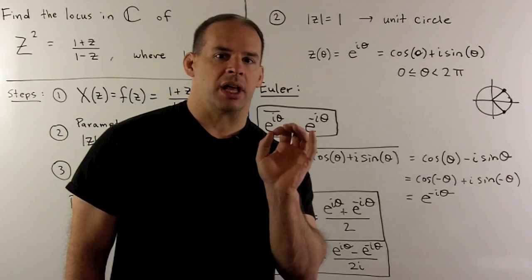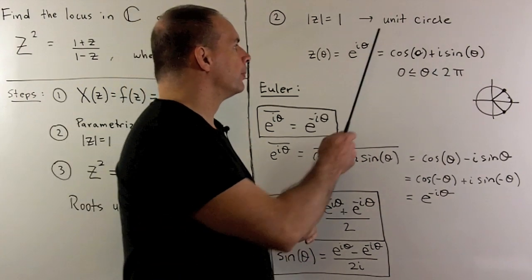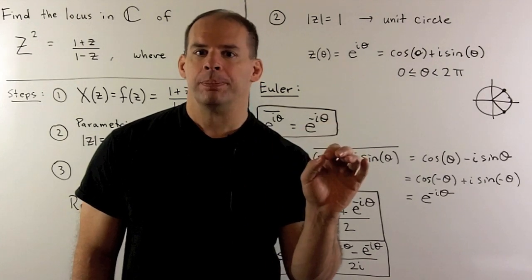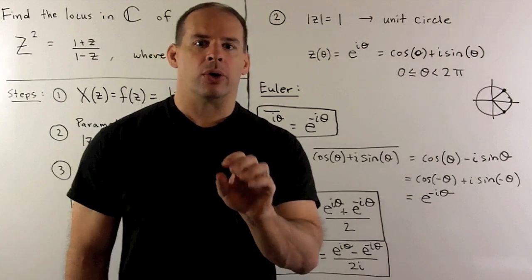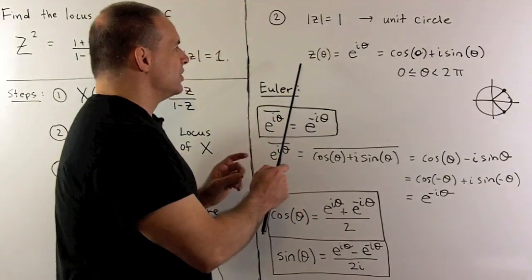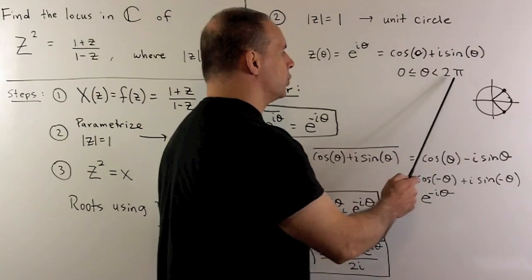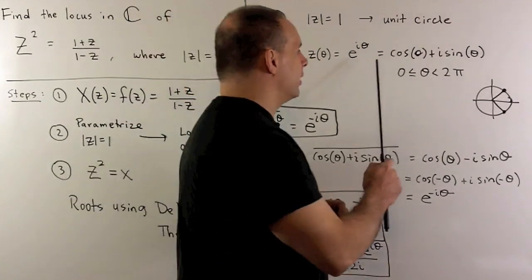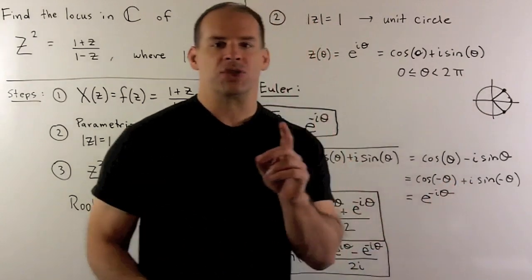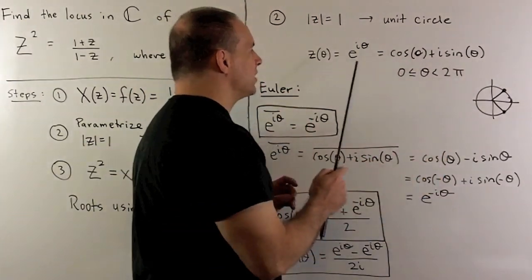First, we parametrize the set of all points in the complex plane with modulus equal to 1. That set is going to be the unit circle. To parametrize, we're looking for functions and an outside variable, so that when we let that variable or parameter change, it sweeps out the set that we're interested in. We can use z of theta equal to cosine theta plus i sine theta, where theta ranges from 0 to 2 pi. By Euler's formula, I can rewrite this as e to the i theta.